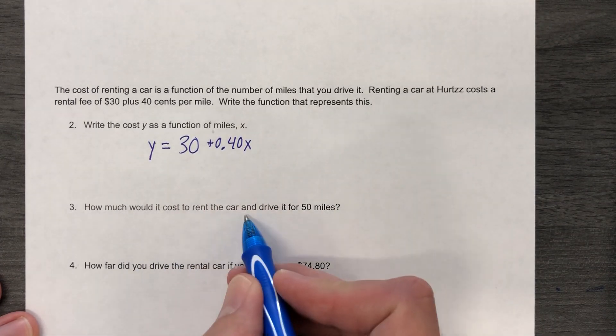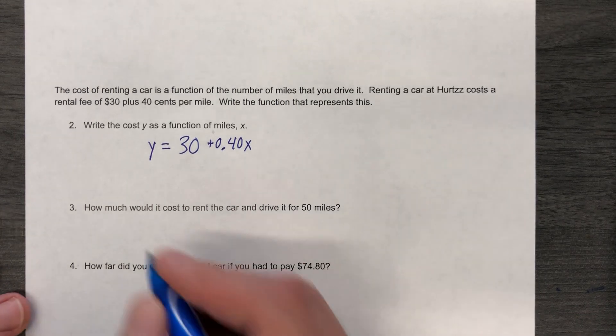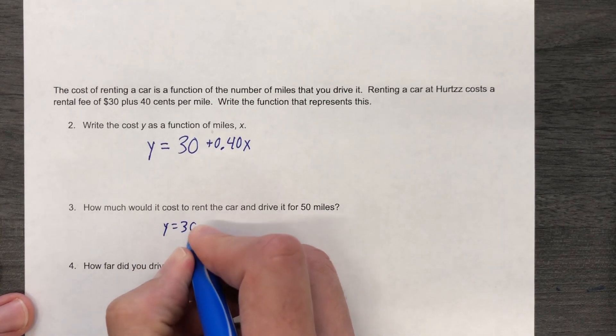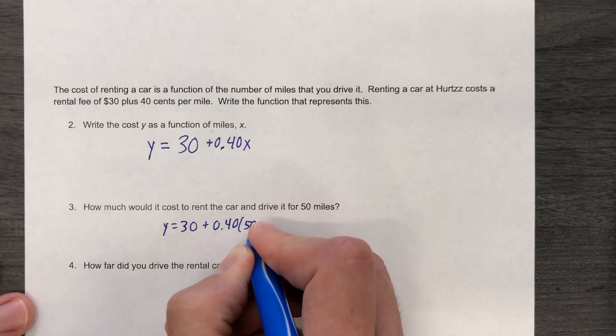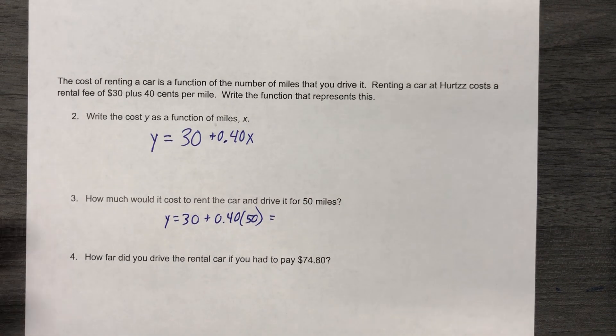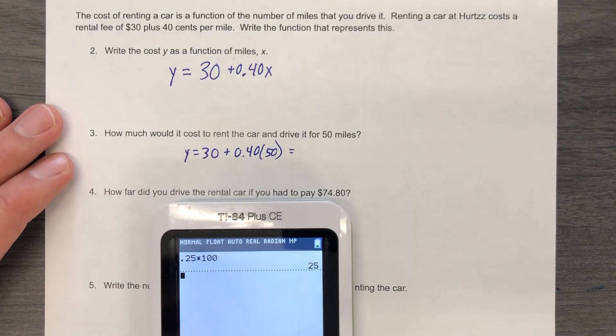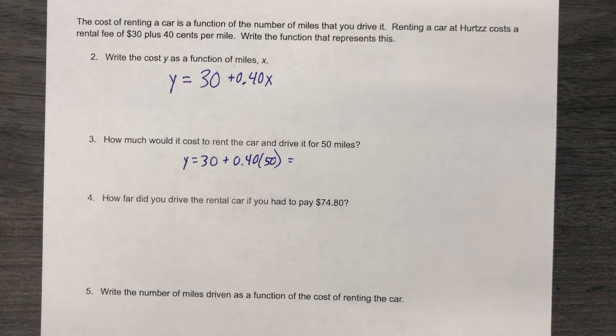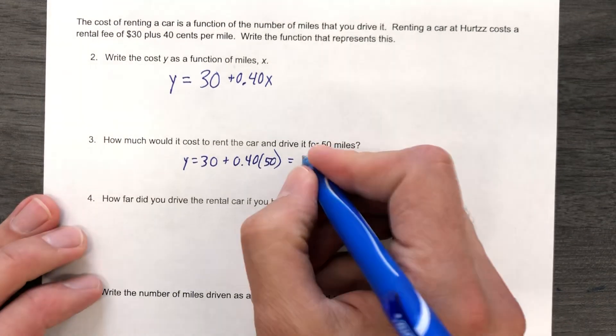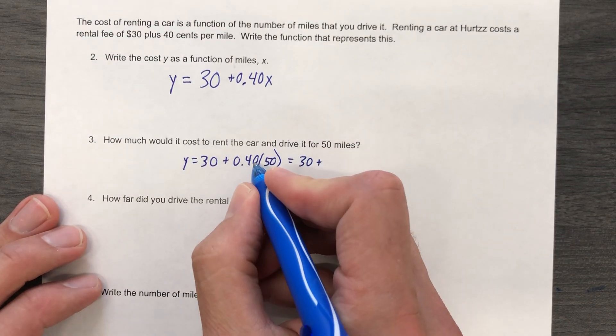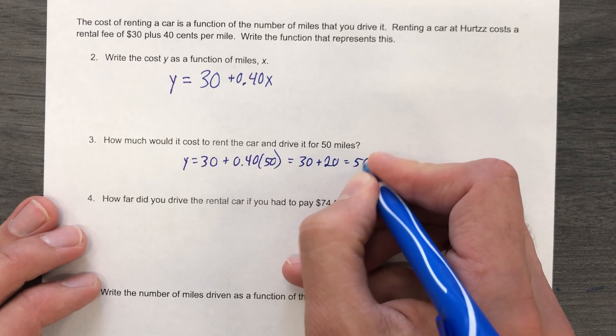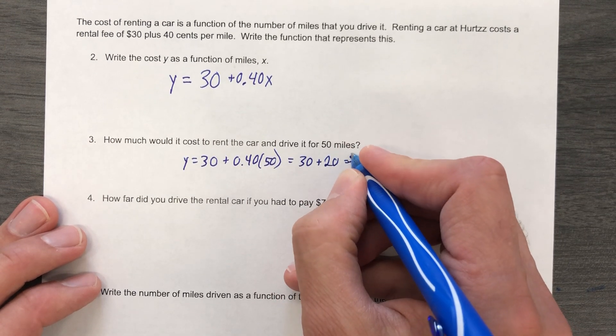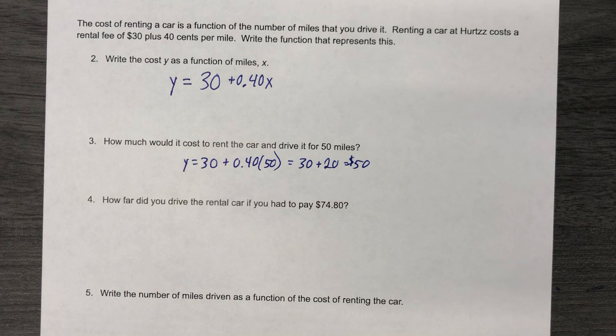How much would it cost to rent the car and drive it for 50 miles? Well, that works. So Y equals, I pay $30, and then I pay $0.40 per mile for 50 miles. And then I'd figure this out. That would be $30, and then 40% of 50 would be $20, and so that gives me $50. So when I drive 50 miles, I pay $50.